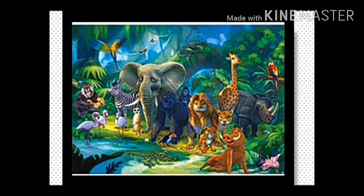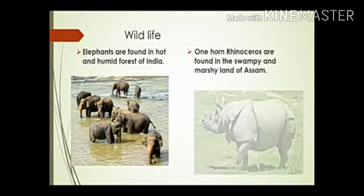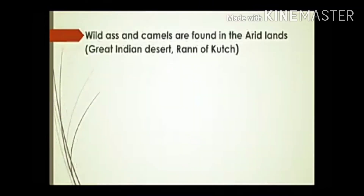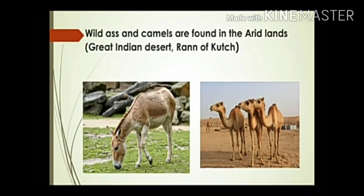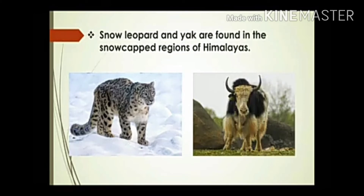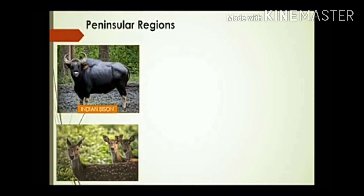Elephants are found in the hot and humid forests of India, especially in Kerala and Karnataka. One-horned rhinoceros are found in the swampy and marshy land of Assam. Wild ass and camel are found in the arid desert area of Rajasthan — the Great Indian Desert — and Rann of Kutch in Gujarat.